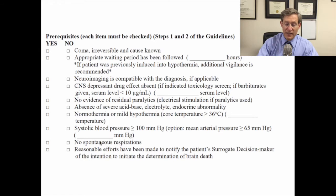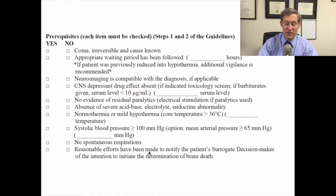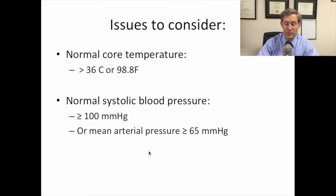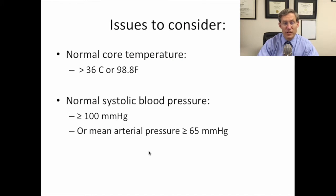At this point, reasonable efforts have been made to notify the patient's surrogate decision maker of the intention to initiate the determination of brain death. A normal core temperature and normal systolic blood pressure should be obtained if at all possible.